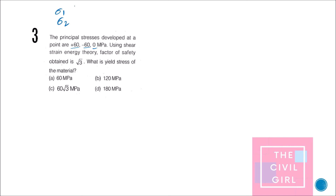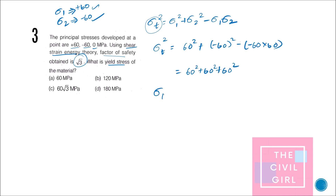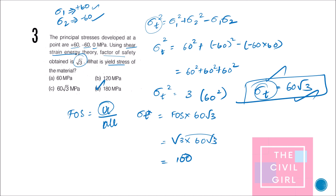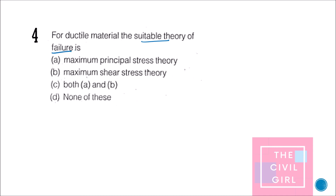Question 3: Principal stresses developed at a point are +60, −60, and 0. Sigma_1 = +60, sigma_2 = −60. Using shear strain energy (distortion energy) theory, the factor of safety is root 3. We need to find the yield stress of the material. Factor of safety = ultimate / allowable, so sigma_t* = factor of safety × allowable = root 3 × 60·root 3 = 180. The answer is option D.